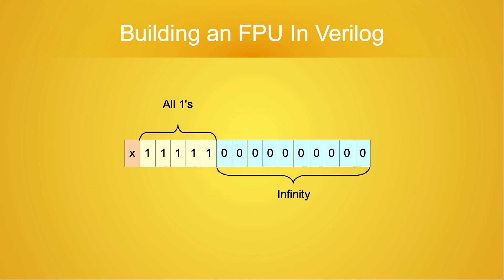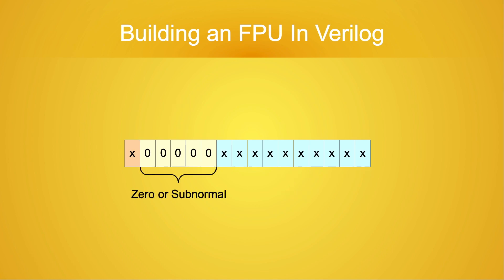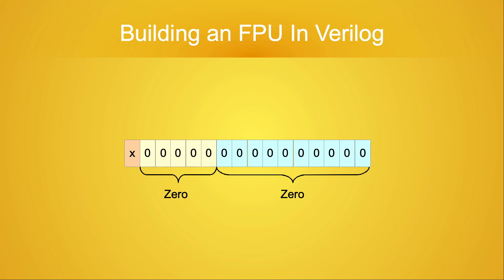When all the exponent bits are set to one and all the significand bits are cleared to zero, the value stored is either positive infinity or negative infinity based on whether the sign bit is zero or one respectively. Now let's look at the case when all of the exponent bits are cleared to zero. I stated earlier that this means the value is either zero or subnormal. For the value to be zero, all of the bits of the significand must be cleared to zero. Like the infinities, zero can be either positive zero or negative zero depending on the sign bit — positive zero when the sign bit is zero, negative zero when the sign bit is one.